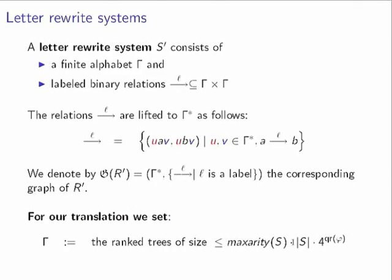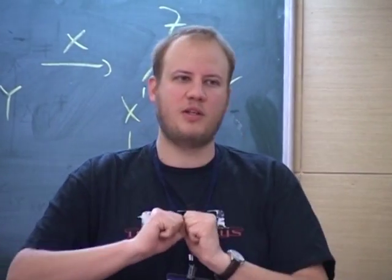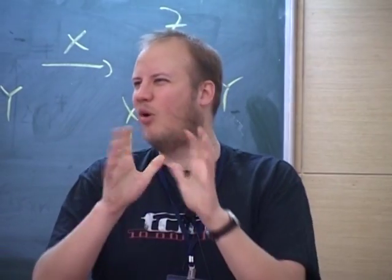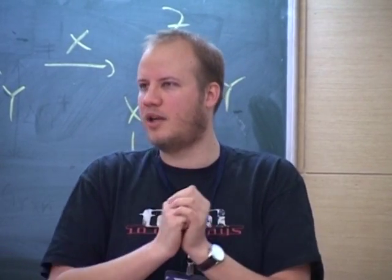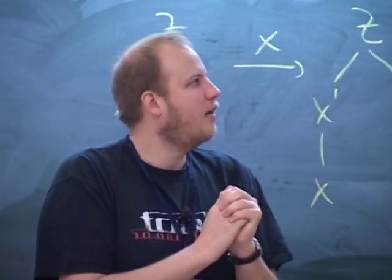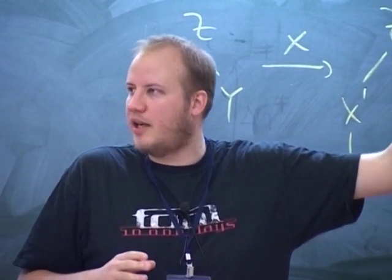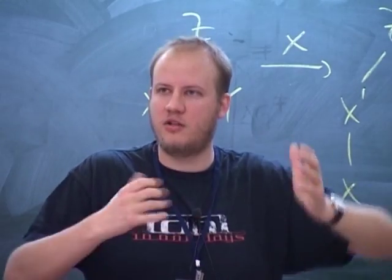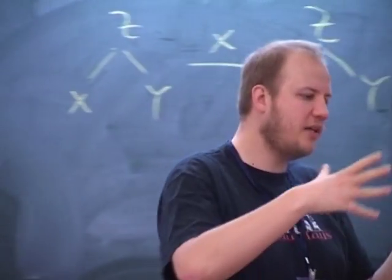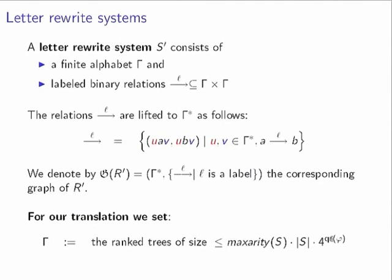This set is doubly exponential — there are doubly exponentially many trees of exponential size. So we have a doubly exponential alphabet. The key intuition is: if you have a formula of quantifier rank i, it cannot touch any tree of size larger than |ground rewrite system| × 4^i. If you have a large enough tree, a rank-i formula cannot touch its leaves — the tree is simply too big.